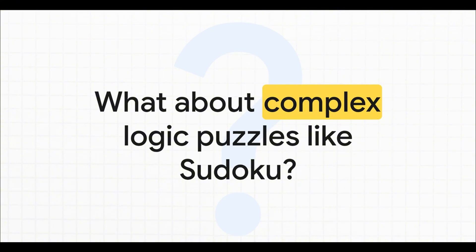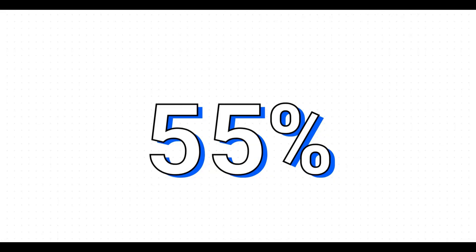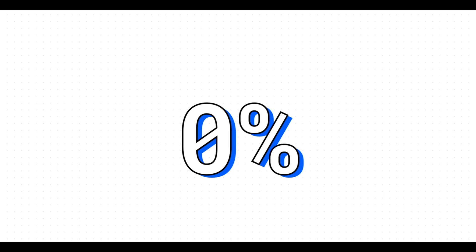All right, but what happens when you throw a really tough logic puzzle at it? Something that needs trial and error, where you have to backtrack and rethink. You know, like a super hard Sudoku puzzle. Well, HRM was tested on hard and extreme Sudoku puzzles, and it successfully solved 55% of them. For any AI, that is a pretty remarkable success rate. So, what about the chain of thought models? What was their success rate? Zero. A big, fat zero percent. Not a single one solved. That right there is the stark, undeniable difference between a linear process and a recursive, looping one.